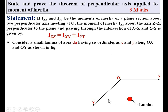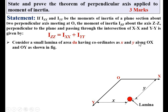This distance x is the distance of the centroid of the lamina from the YY axis, and this distance y is the distance of the centroid of the lamina from the XX axis. So x and y are the coordinates along OX and OY respectively.